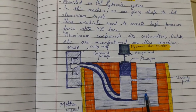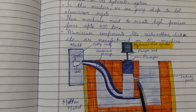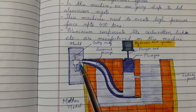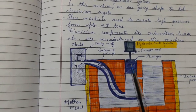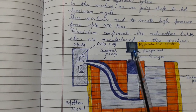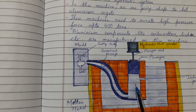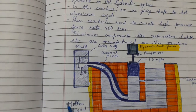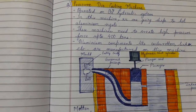Here, this is the molten metal and this is the intake port, this is the mould, and this is the cavity where the molten metal will be poured. This is the gooseneck passage, this is the plunger, and this is the hydraulic shot cylinder with which the plunger is pushed. The molten metal gets pushed into the cavity so that the components are manufactured. That was the pressure die casting machine.